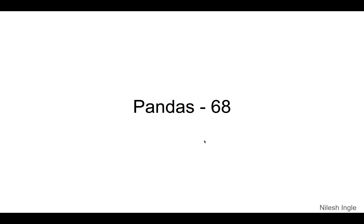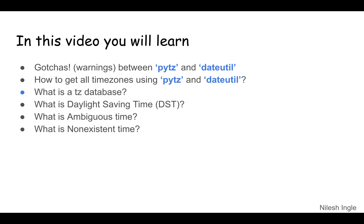Hello and welcome to LearnData. It's great to have you on this channel. I am Nilesh and in this video we'll continue to learn about time in pandas. We'll specifically look at two libraries, PYTZ and DATEUTIL, that are used to work with time zones and we'll look at how to get all the time zones from these libraries. Then we'll look at what is a TZ database, what is daylight saving time, and what is ambiguous versus non-existent time. We won't be doing any coding in this video, so it's just an overview of concepts.